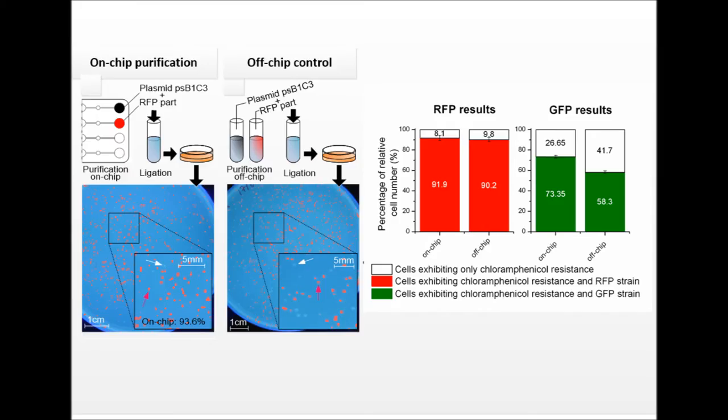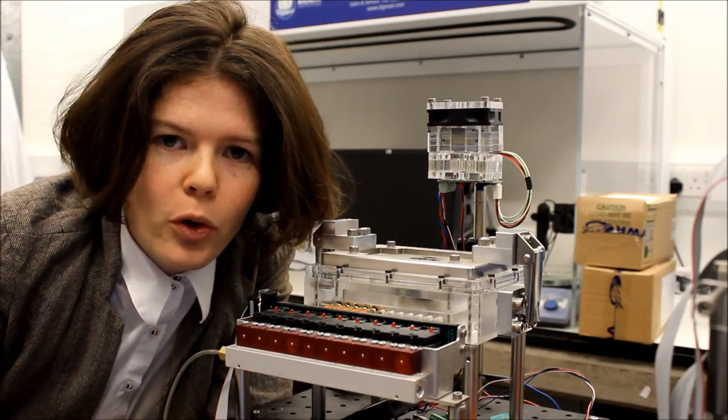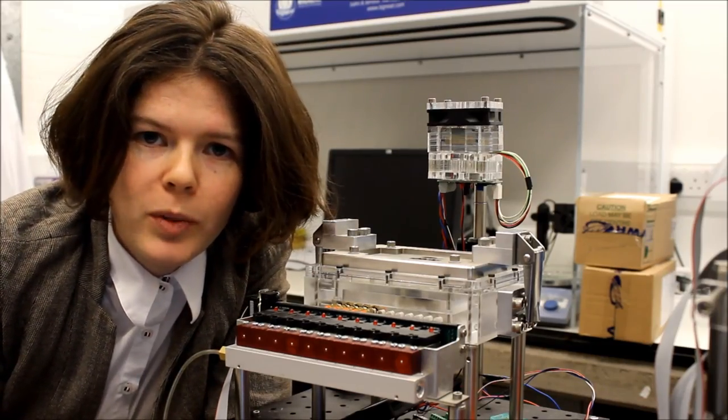We have also shown that in on-chip and off-chip journeys, the percentage of relative cell number to exhibit the correct strain was comparable or up to 20% higher on-chip in a negative control where the preassembled part was replaced with water.